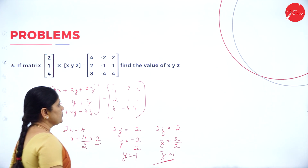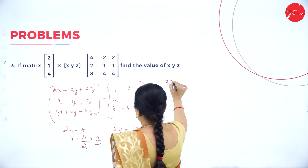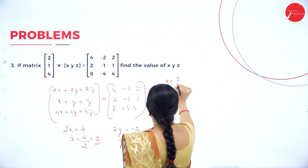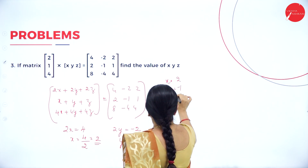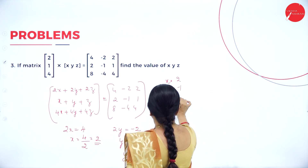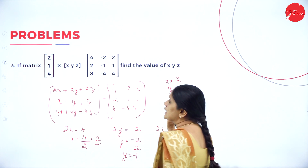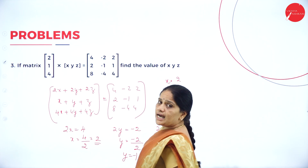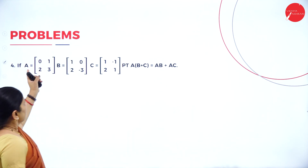So the value of x equals 2, y equals minus 1, z equals 1. This is the answer.